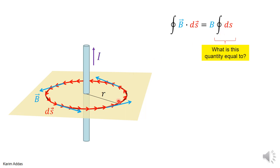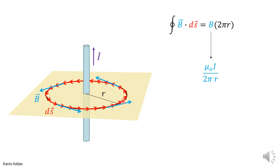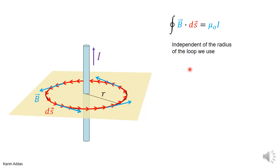The integration of dS means adding all the elements of length, which gives the total circumference: 2πr. We derived before that the magnetic field due to an infinite wire is μ₀I / 2πr, where r is the perpendicular distance to the point. Substituting this, the 2πr cancels, and the result simplifies to μ₀I. The answer is independent of the radius of the loop — whether you make a bigger or smaller loop, this integral doesn't change.